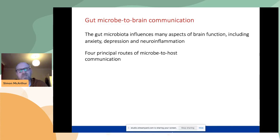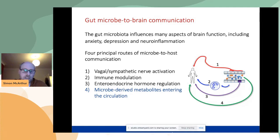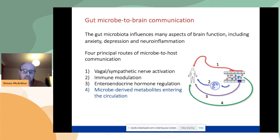We know there are probably about four main routes of microbial-to-host communication. We have the vagal and sympathetic nerves and the connections between the enteric and central system. There's immune modulation and changes through the immune system, modulation of enteroendocrine hormone regulation, and the various hormones that move from the gut up to the brain controlling satiety and feeding. And the pathway I'm most interested in is the microbe-derived metabolites that enter the circulation.